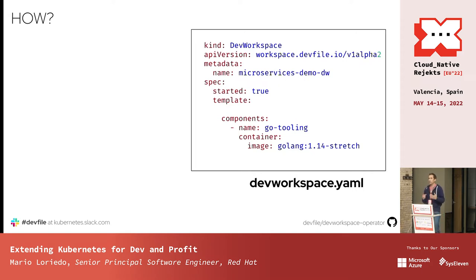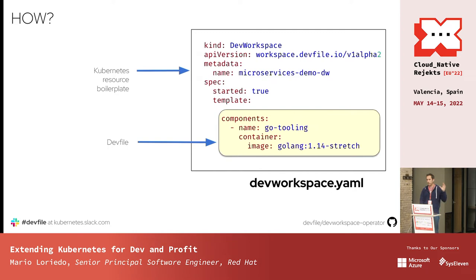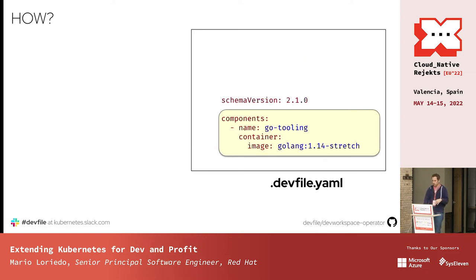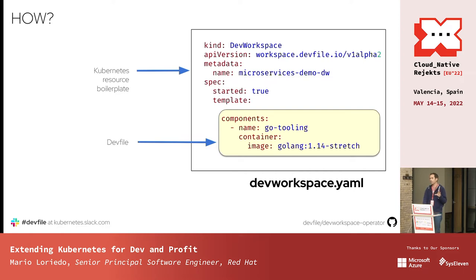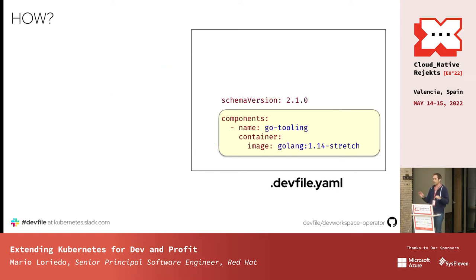At the bottom of a DevWorkspace, you can see a template and a component — this is the core. You have a container, but you can extend it with source code that will be injected automatically into the component. You can have commands for building, testing, and debugging your application. This is the devfile specification. There was a talk this morning about devfiles; the devfile is a YAML file you can version with your source code. It's straightforward to translate that into a DevWorkspace Kubernetes manifest with some Kubernetes boilerplate added.